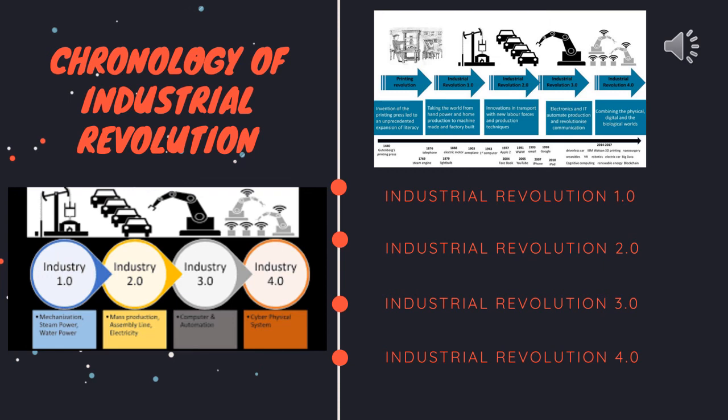The application of information and communication technologies to industry is also known as Industry 4.0. It builds on the development of the third Industrial Revolution. The production systems that already have computer technology are expanded by a network connection and have a digital twin on the internet, so to speak. This allows communication with other facilities and the output of information about themselves.